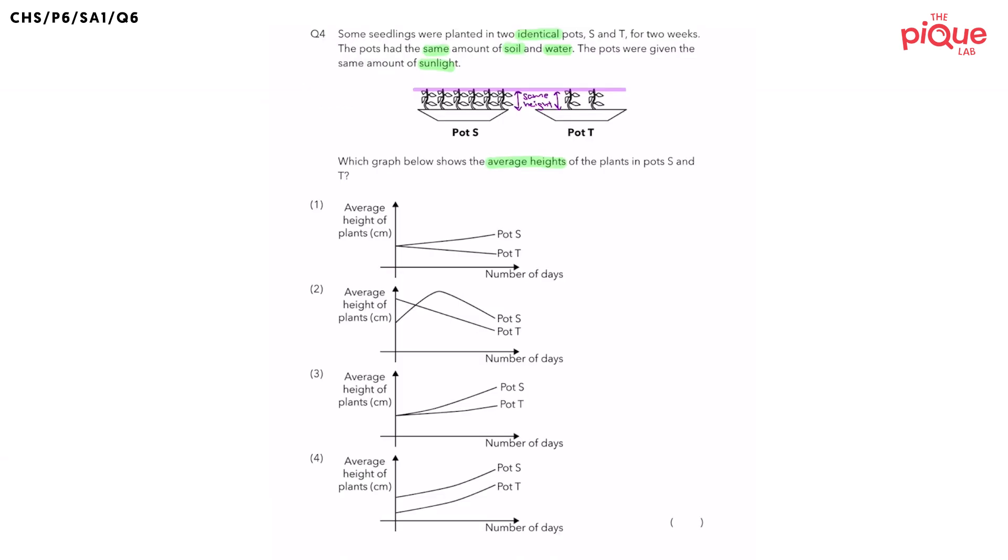We can see that the average height of the plants are actually the same. So, in our graph, we know that the average height of the plants in pots S and T have to start off from the same point.